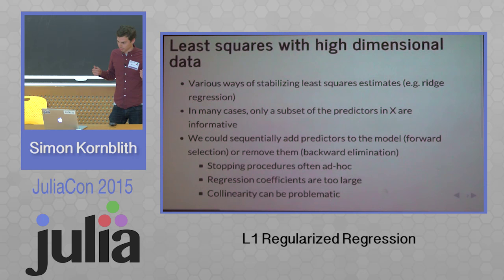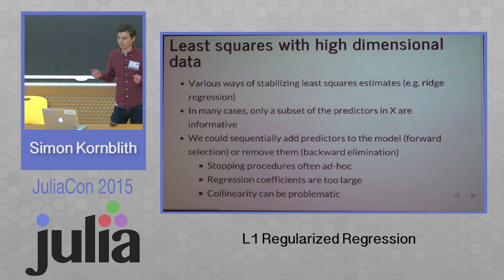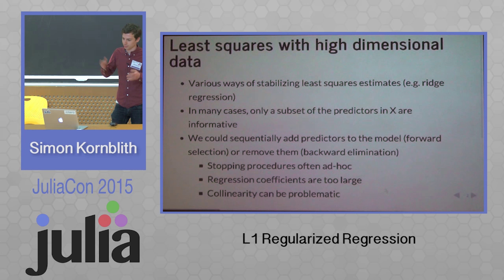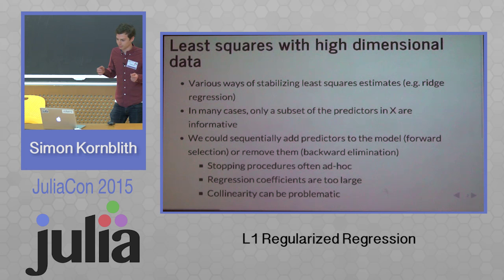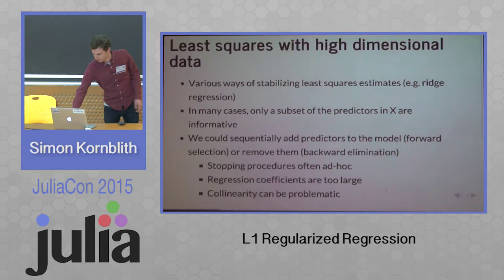There are various ways of stabilizing least squares estimates if you have a lot of predictors. Ridge regression is one example. But in many cases, we know in advance that only a subset of the predictors are actually going to be informative. One approach is to add predictors to the model iteratively or remove them, but the stopping procedures are often kind of ad hoc. You don't know how many predictors you should actually have in the model, and the regression coefficients end up being larger than they should be. If you have collinear predictors, this doesn't work very well.